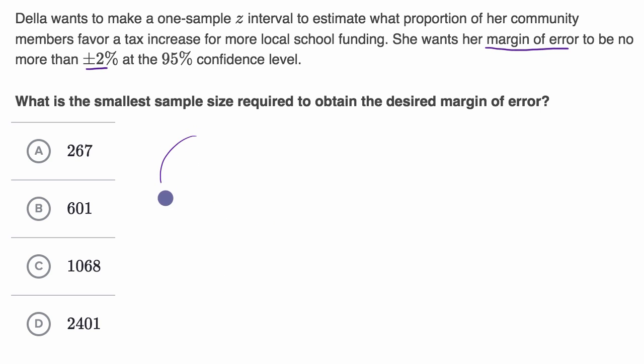She wants to estimate the true population proportion that favor a tax increase. She doesn't know what this is, so she's going to take a sample of size n. In fact, this question is all about what n does she need in order to have the desired margin of error.